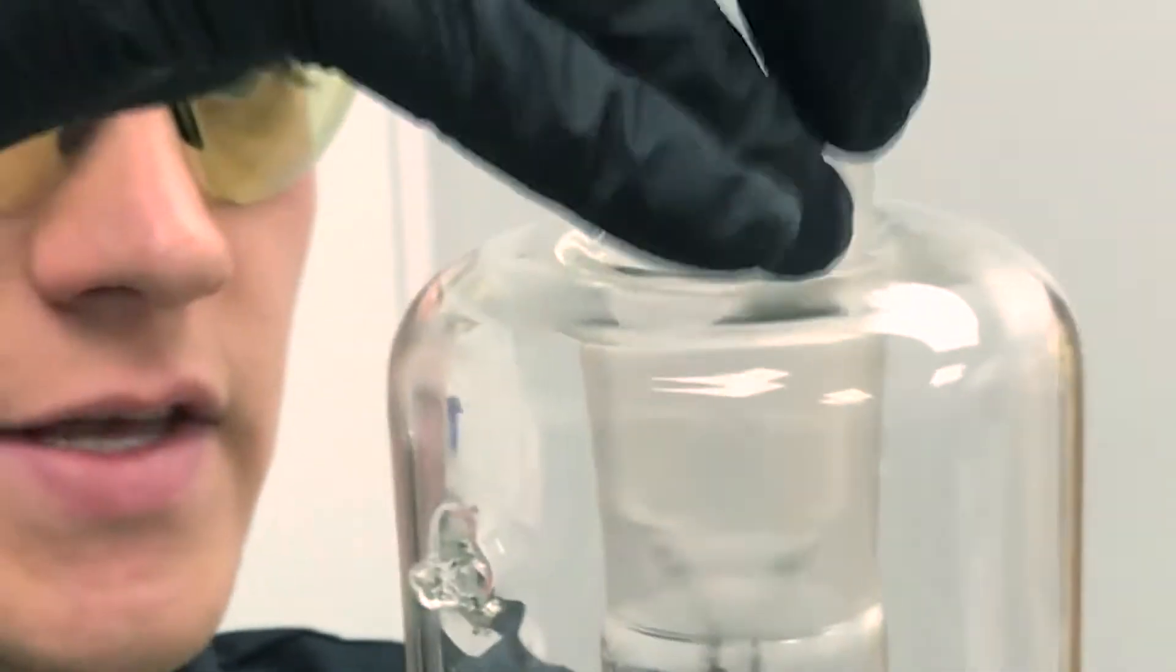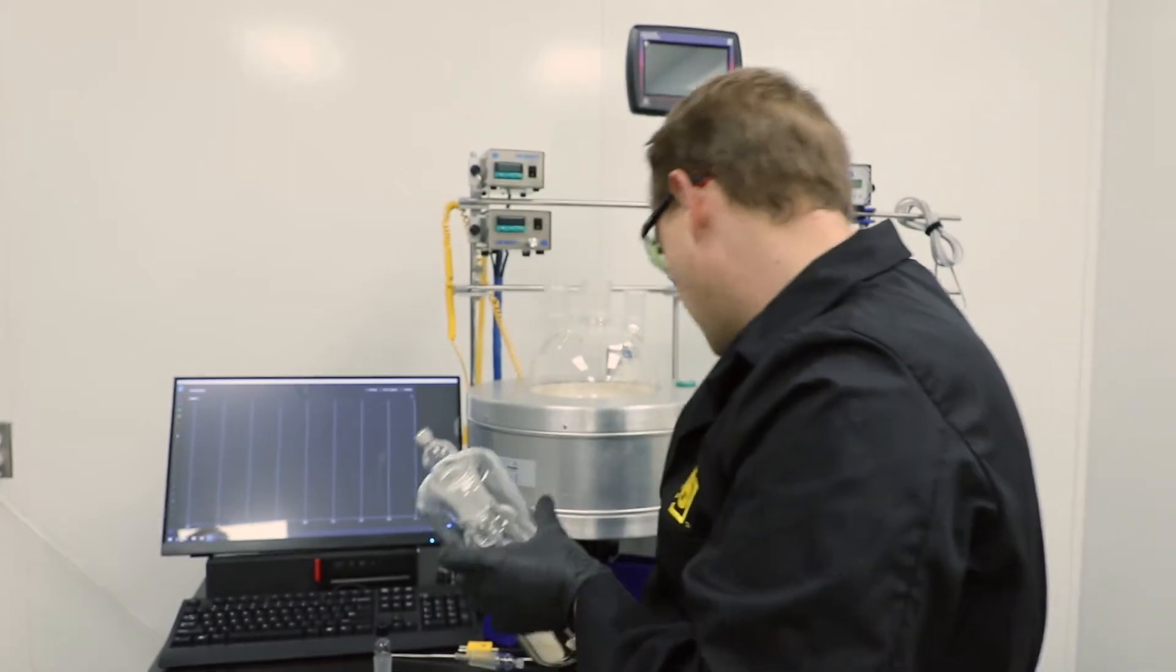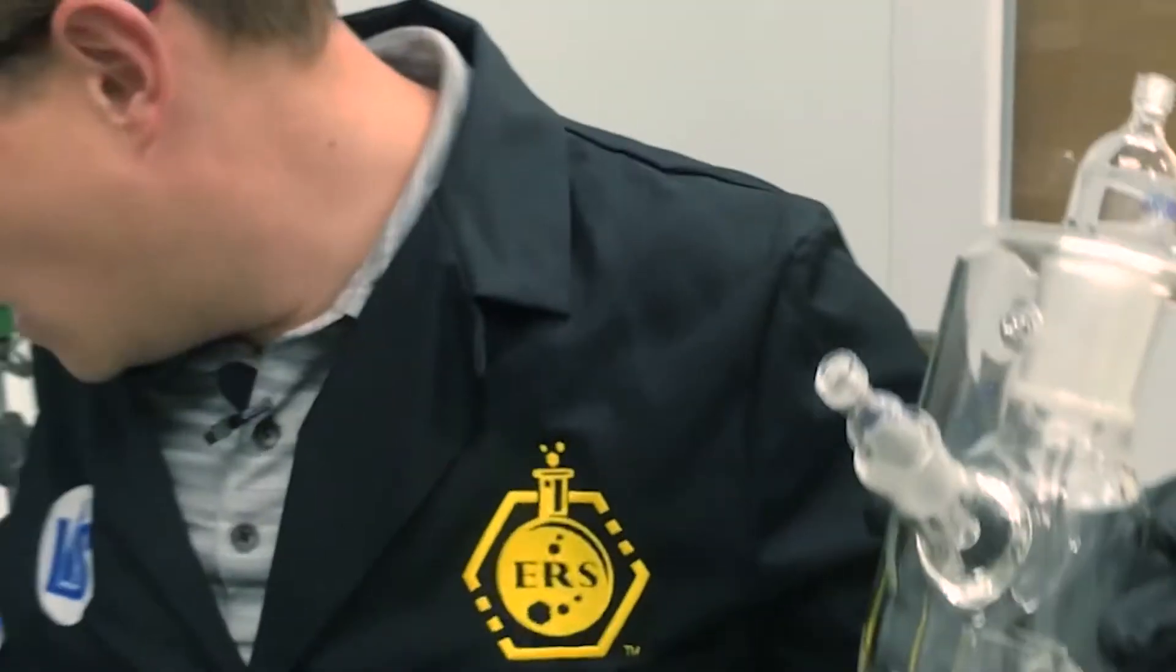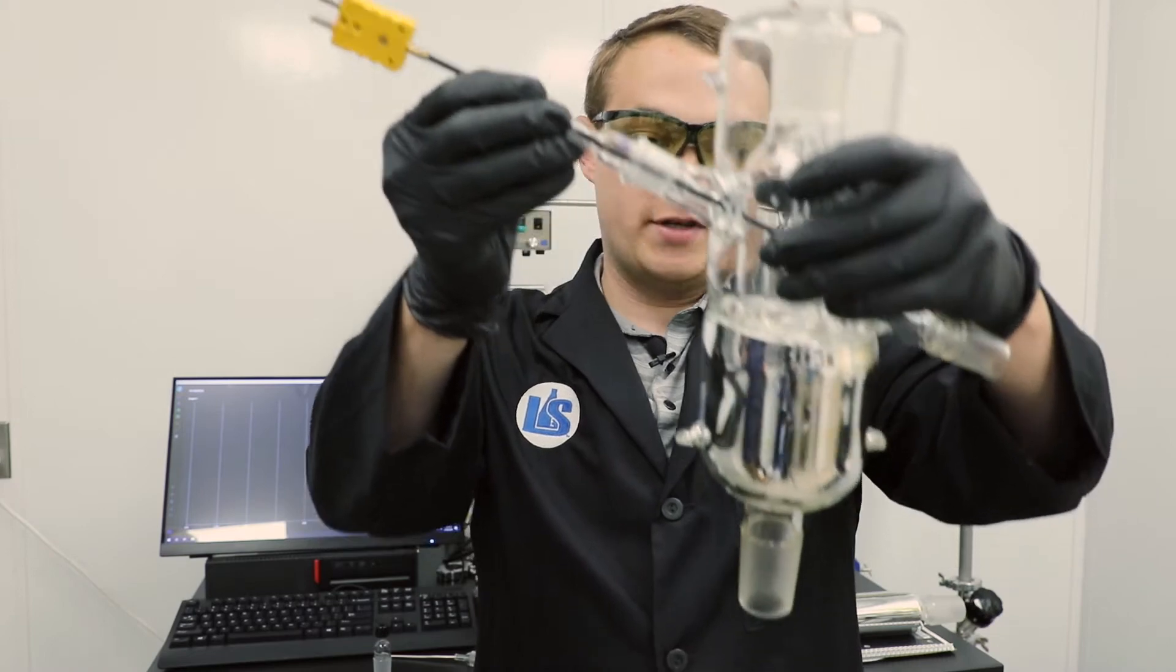So anything that condenses on this will actually drip straight back down into the flask and then go through reflux again. And then at the same time, we can be reading our temperature inside of our head off to the side with a fixed thermocouple adapter on the side.